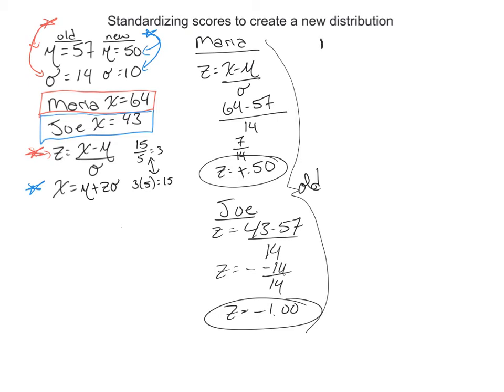So now let's do it where we're doing the new standardized one. Now we're going to use, we'll do Maria first again. So we have, now we're going to use this formula. So X equals mu plus Z times standard deviation. So we're trying to find out her new score. And again, X is the note for score. So her, the new average that the professor wants to use is 50, plus her Z of 0.5, times this new standard deviation of 10. So we go 50 plus, in this case, 5, right? 0.5 times 10. So Maria's new score, in this new standardized distribution, is 55.